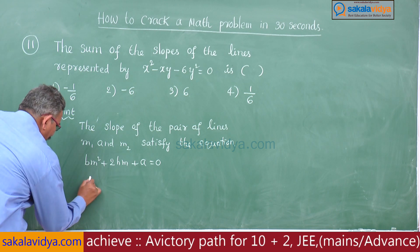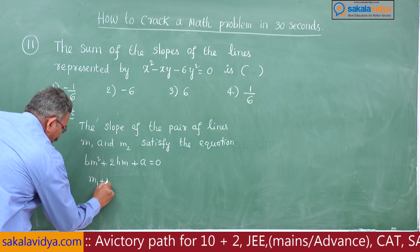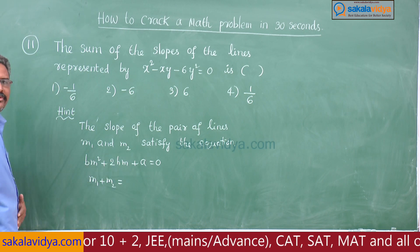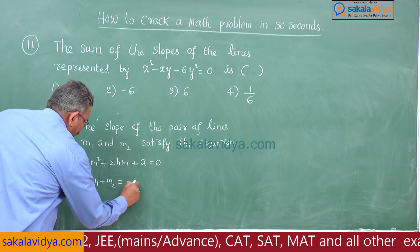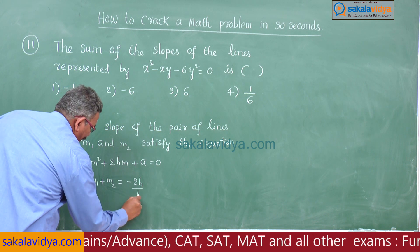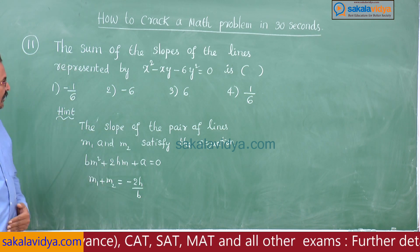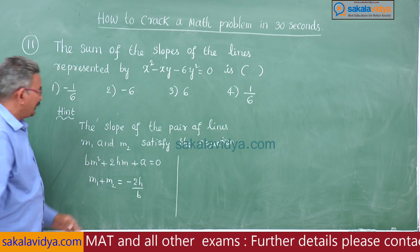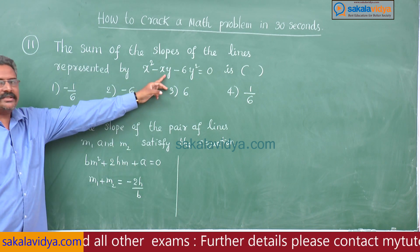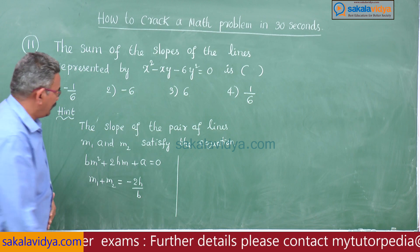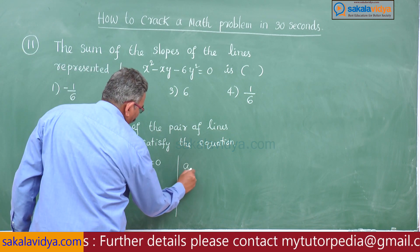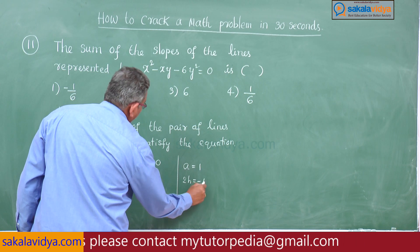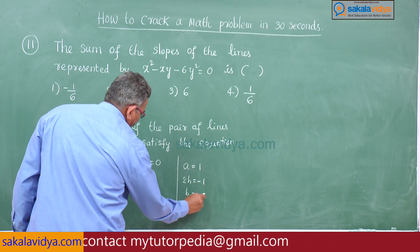The sum of the roots m₁ + m₂ equals minus the coefficient of m divided by the coefficient of m², that is -2h/b. Comparing with the standard form ax² + 2hxy + by² = 0, for this problem we get: a = 1, 2h = -1, and b = -6.